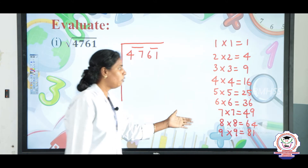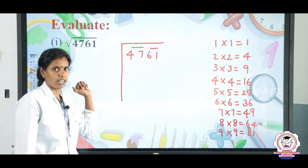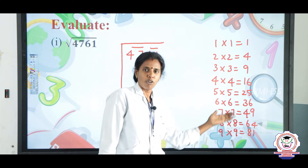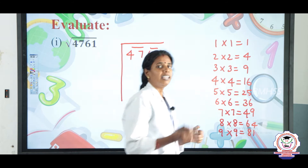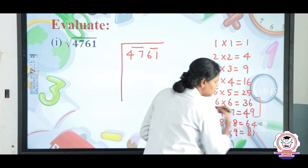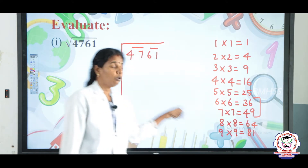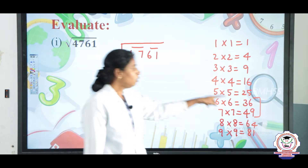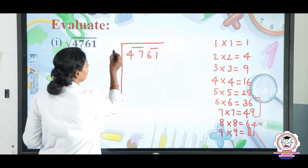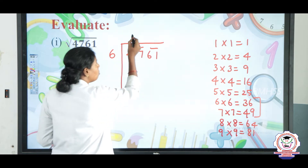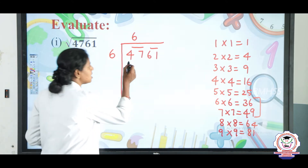Using this table we solve the first step. The first pair is 47. In the table, 47 falls between 36 and 49. We cannot take 49 because it is greater than 47, so we take the previous number 36. The number is 6 — write 6 in the divisor place and 6 in the quotient place. 6×6=36.